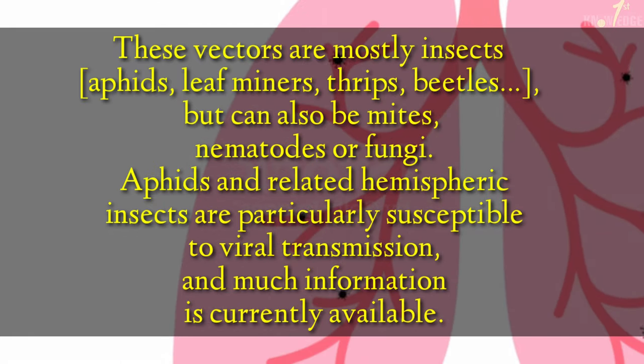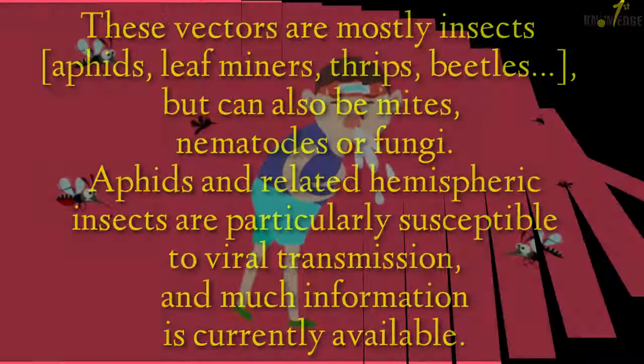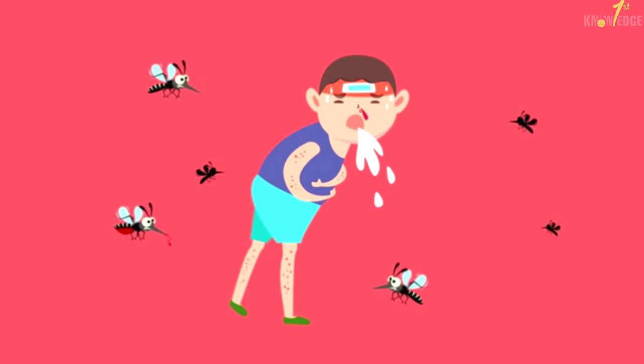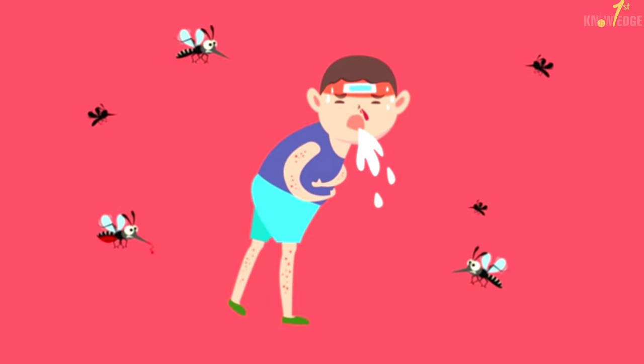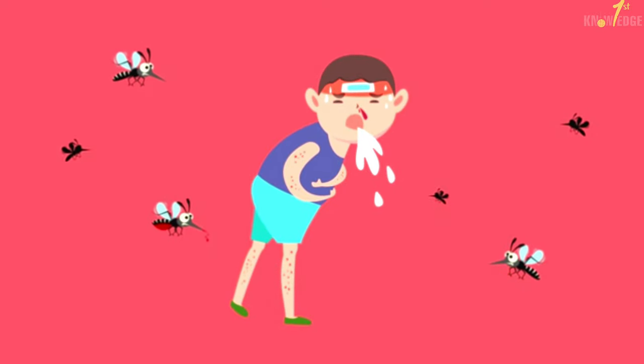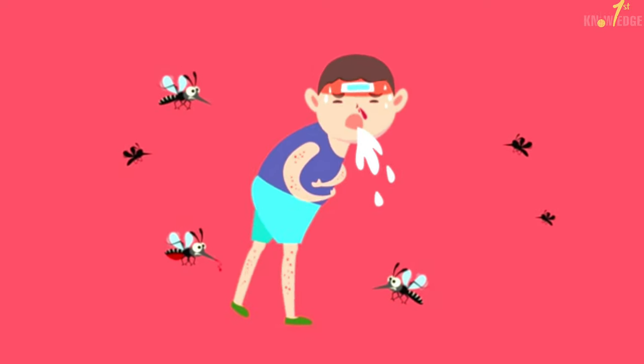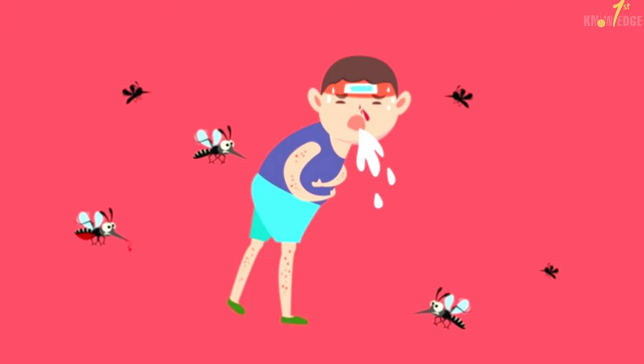Influenza viruses are spread by coughing and sneezing. Noroviruses and rotavirus, which are common causes of viral gastrointestinal diseases, are transmitted through fecal matter, either by hand-to-mouth contact or by food or water. The dose of norovirus needed to cause infection in humans is less than 100 particles. HIV is one of the few viruses transmitted through sexual contact and exposure to infected blood.